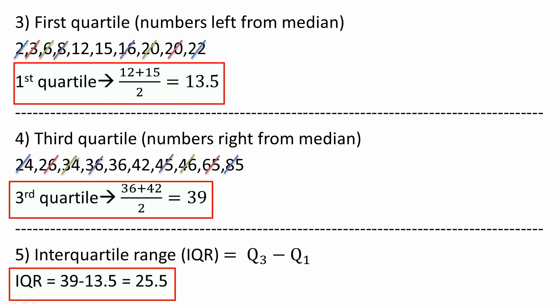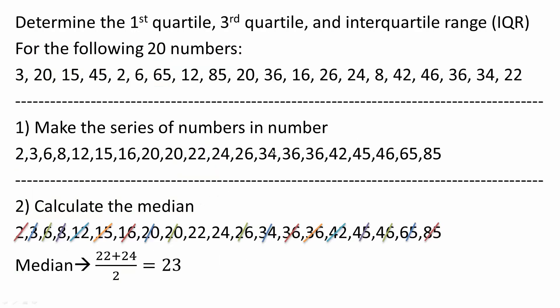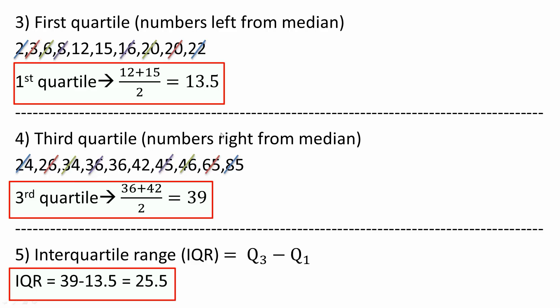Next, I need to do the third quartile, which is the numbers right from the median. So the median was 23, so right means 24 all the way to 85.